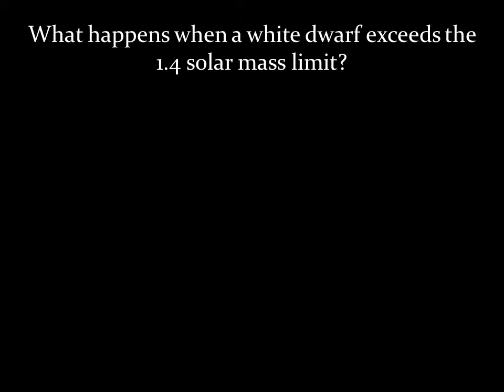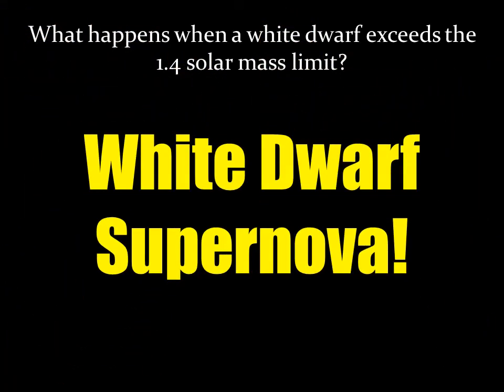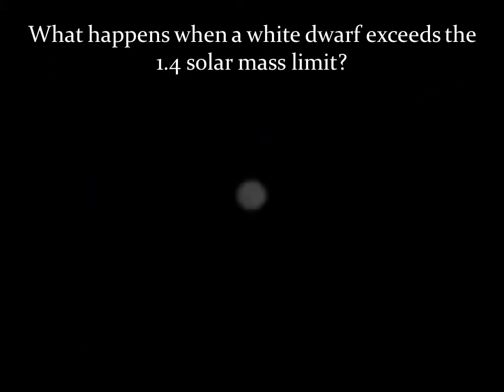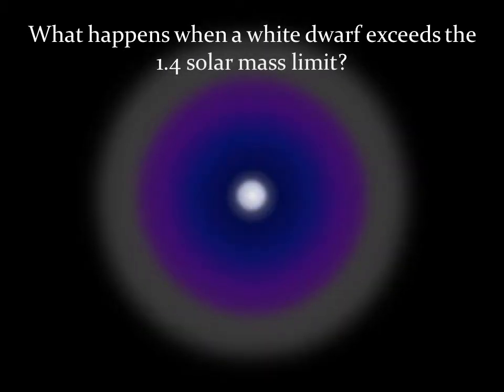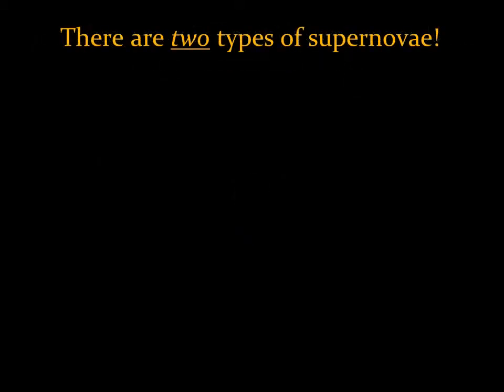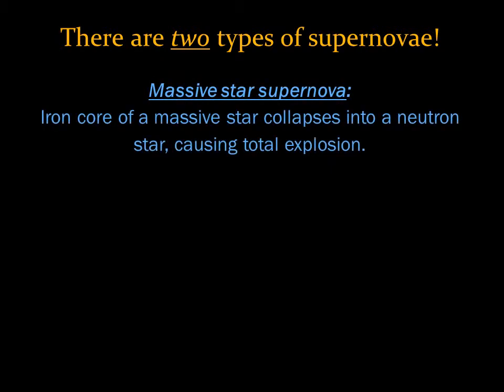What happens when a white dwarf exceeds the 1.4 solar mass limit? We get a white dwarf supernova. There are two types of supernovae. We learned about the massive star supernova already — this is when the iron core of a massive star collapses into a neutron star, causing a total explosion. A white dwarf supernova is different.